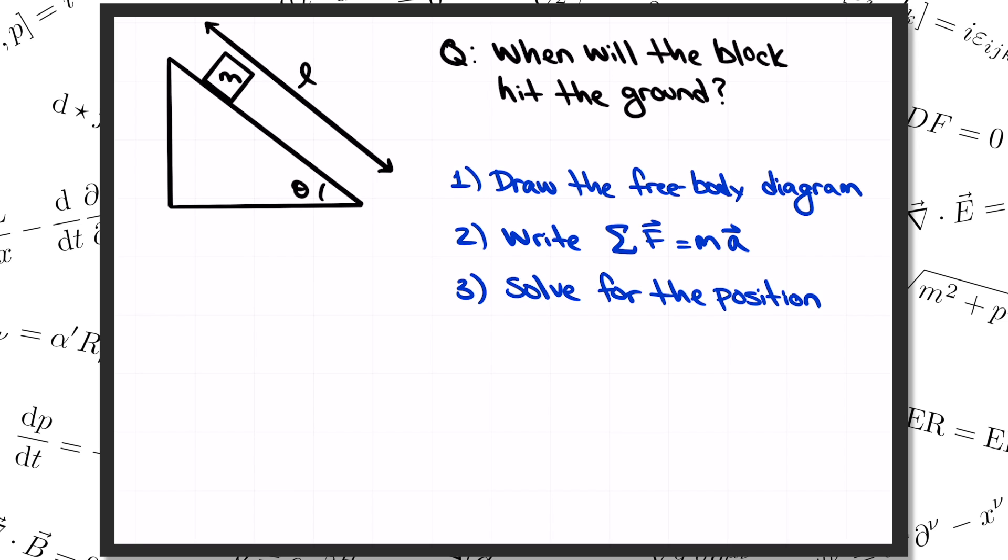So now let's apply that procedure to our block. Step one, we want to know all the forces acting on the block. There's only three of them here. We've got gravity mg that's pulling straight down. Then there's the normal force N from the ramp pushing on the block. And by definition, that's pointing perpendicular to the surface of the ramp. And finally, there's a friction force that's pointing back up the ramp, trying to slow down the block as it slides down. So there we go, we've already finished step one.